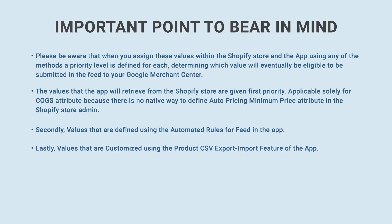Important points to bear in mind. When you assign these values within the Shopify store and the app using any of the methods, a priority level is defined for each, determining which value will eventually be submitted to your Google Merchant Center. First priority goes to values retrieved from the Shopify store — applicable solely for the COGS attribute, since there is no native way to define auto pricing minimum price in Shopify. Second priority goes to values defined using the automated rules for feed feature. Lastly, values customized using the product CSV export/import feature.